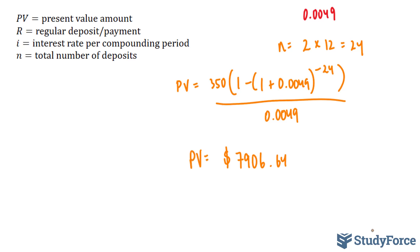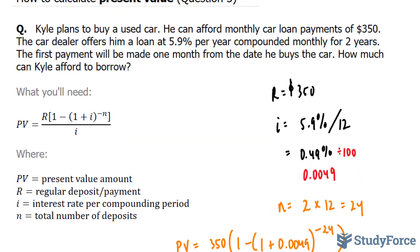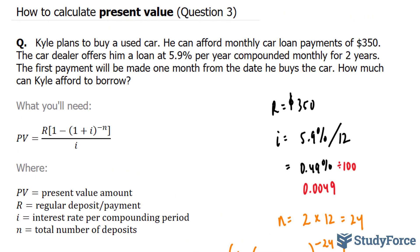So let's talk about what this means for Kyle. For Kyle, this means that he can only afford approximately $7,600 given the interest that the dealership has offered him.